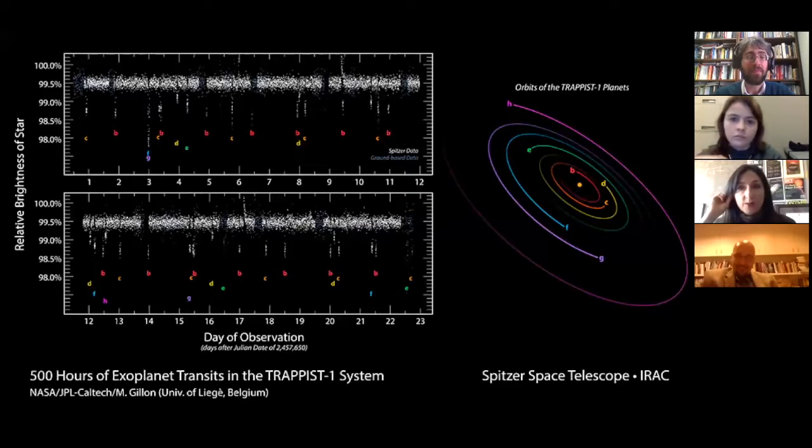But believe it or not, a lot of people stare at these light curves. They use their computers. They try to find planets. And a lot more work has to be done other than this graph. Finding that drop in brightness is just the first step. We need a lot of corroborating evidence to see what's there.